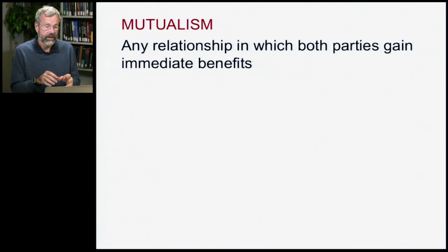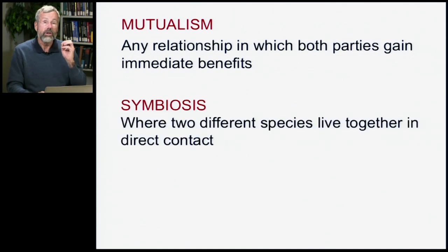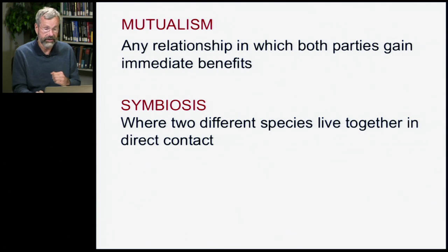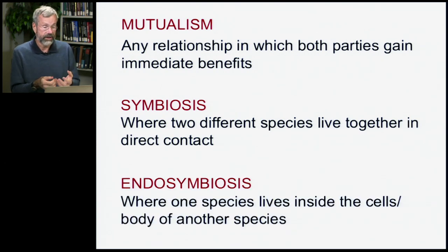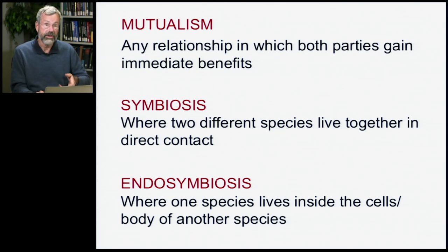Mutualism is where several different organisms gain immediate benefits from their direct interaction with each other, and mutualism includes symbiosis — where two different species live together in direct physical contact. Endosymbiosis is where one species actually lives inside the cells of another. We'll look at both endosymbiosis and symbiosis to understand the origins of complex multicellular organisms.